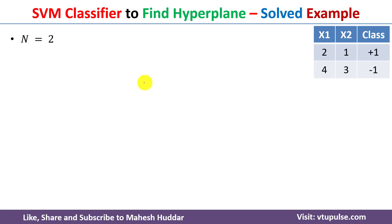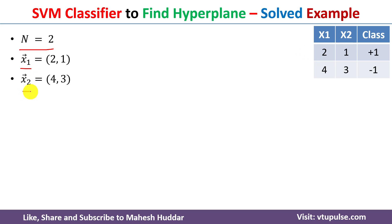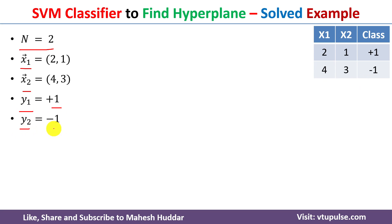We have been given two examples, hence the value of n is equal to 2. The first example is represented with x1 vector and the second one is represented with x2 vector. The first example belongs to class plus 1, so y1 is equal to plus 1, and the second one belongs to minus 1, so y2 is equal to minus 1.